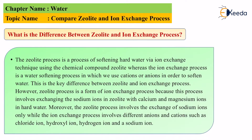In order to soften the water, this is the key difference between the zeolite and the ion exchange process. However, the zeolite process is a form of ion exchange process because it involves ions. Zeolite contains calcium and magnesium ions and tries to remove calcium and magnesium from the hard water. The zeolite process involves the exchange of sodium ions only, while the ion exchange process involves different anions and cations such as chloride ions, hydroxyl ions, hydrogen ions, and sodium ions. So the ion exchange process offers a lot of variety of different ions, whereas the zeolite process has specific ions present.